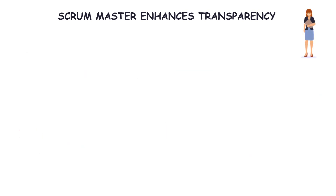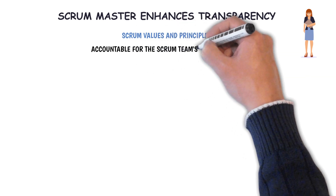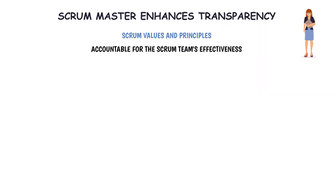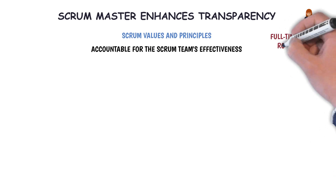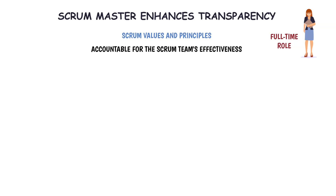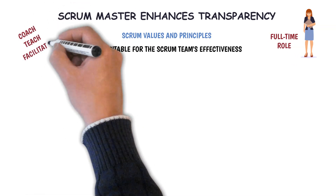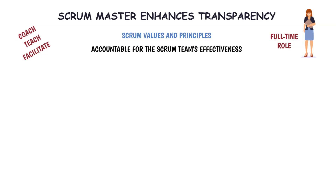As the Scrum Guide says, the Scrum Master is accountable for establishing Scrum as defined in the Scrum Guide. They do this by helping everyone understand Scrum theory and practice, both within the Scrum team and the organization. The Scrum Master is accountable for the Scrum team's effectiveness and enables the Scrum team to improve its practices within the Scrum framework. Scrum Mastery is a full-time role, although many Scrum Masters play a dual role depending on organization structure, complexity, and current practices. A Scrum Master is there to coach, teach, and facilitate Scrum to the Scrum team, the product owner, and the stakeholders.